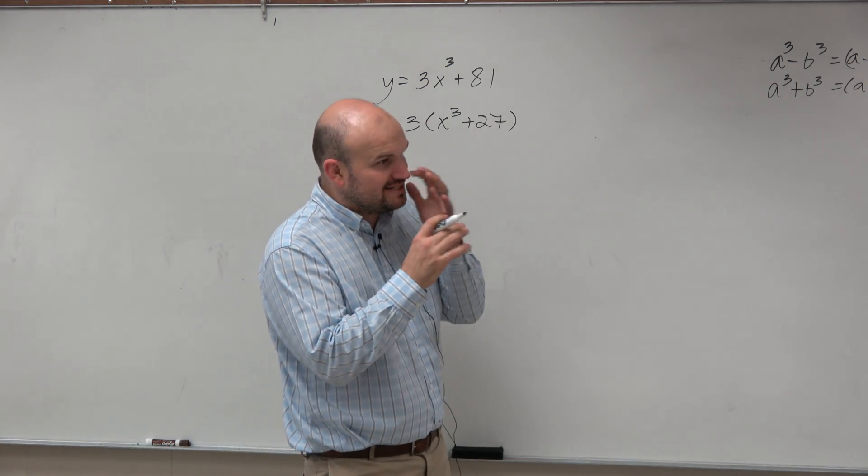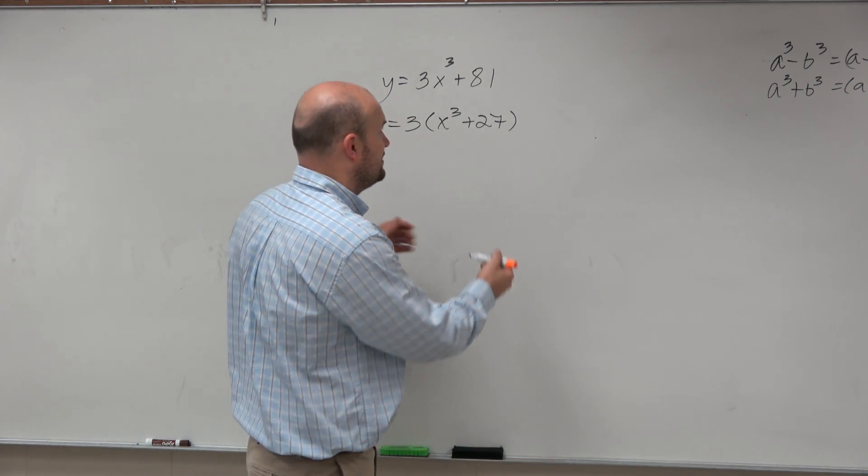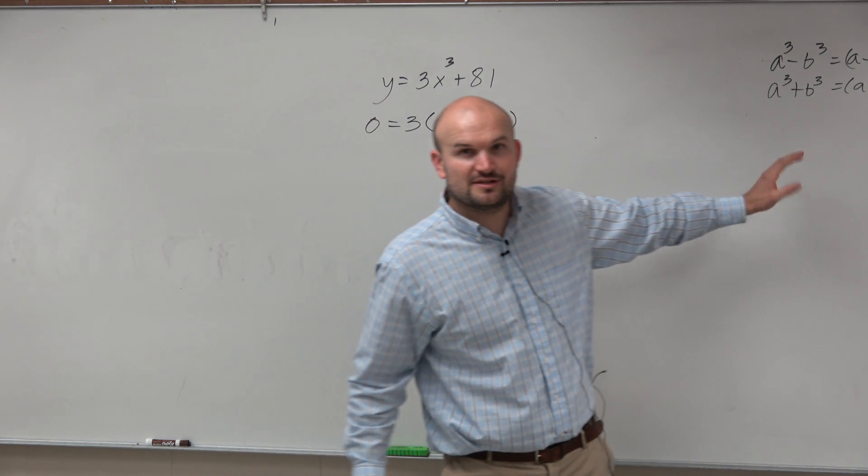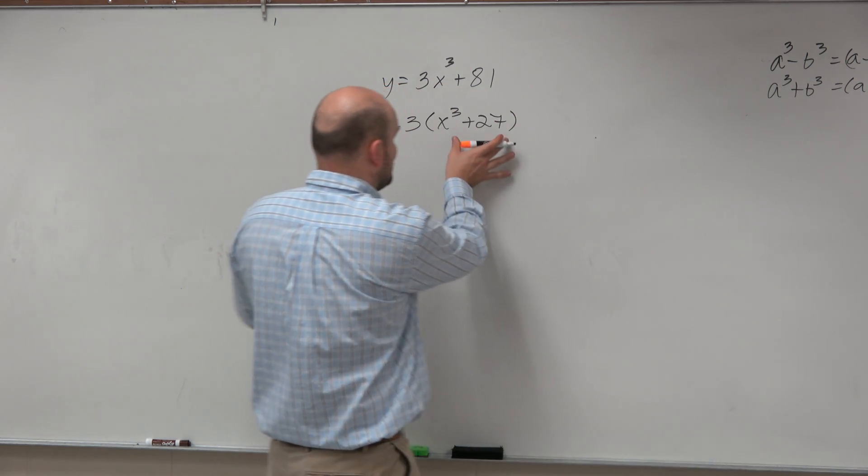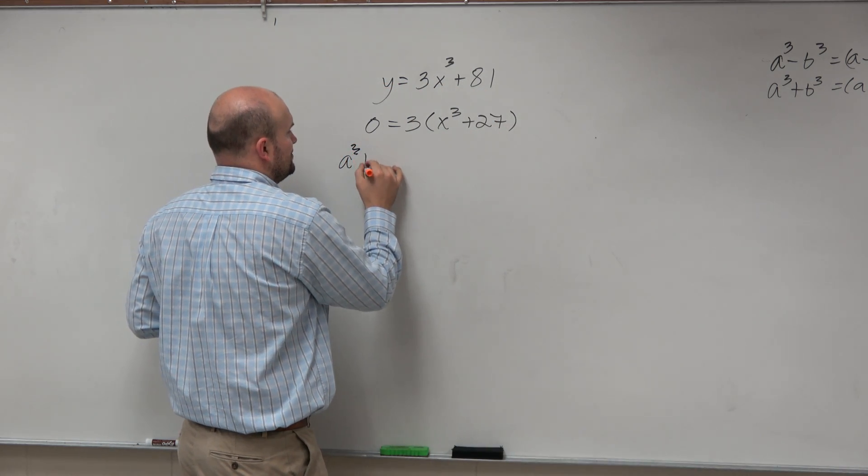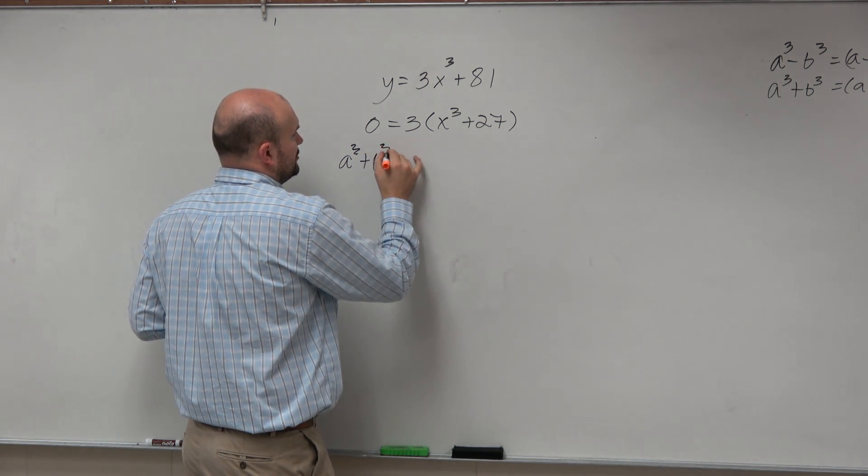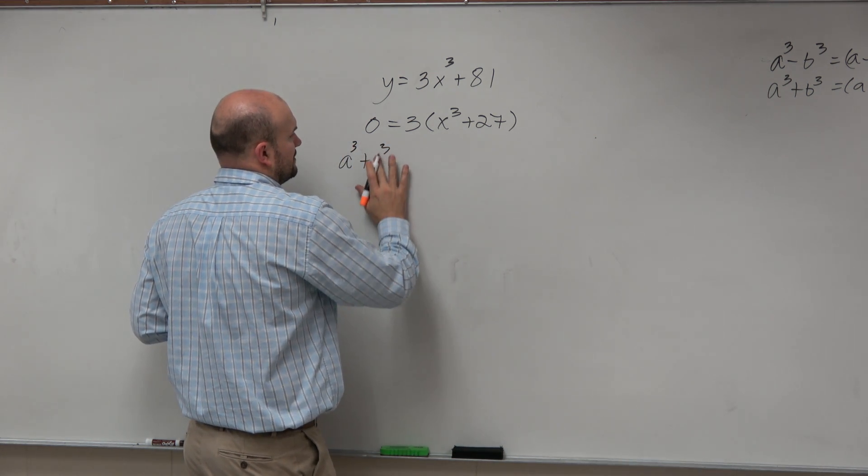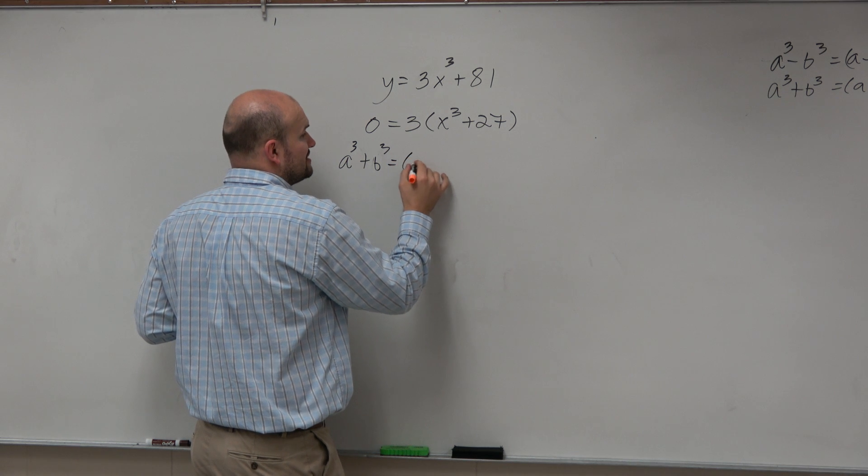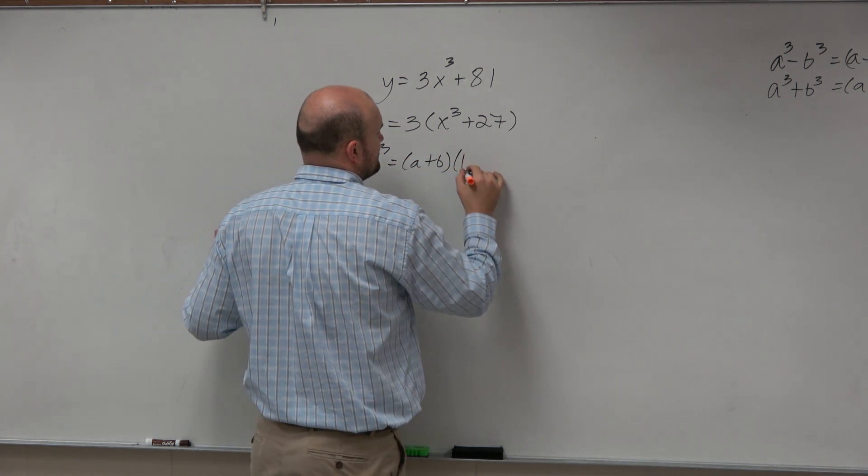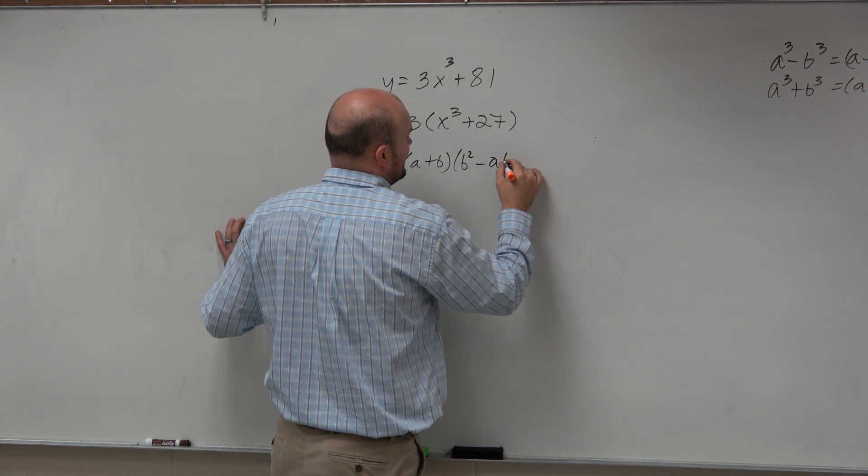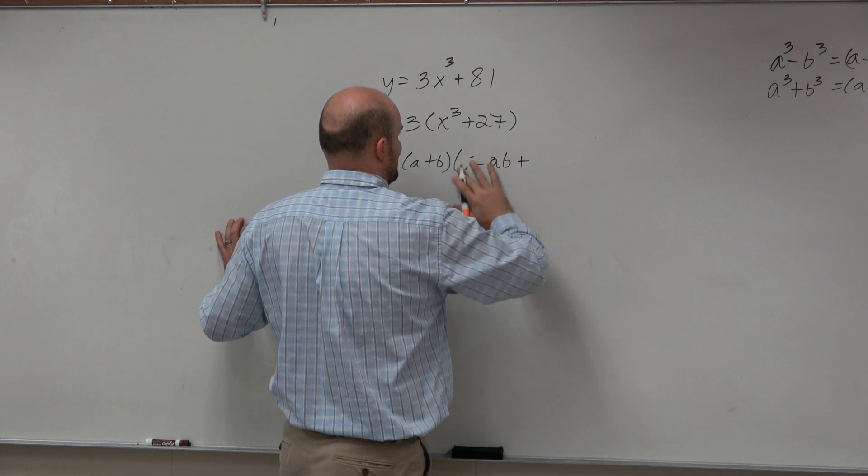So the main important thing is again, by applying the formula. If you guys look at the formulas, right, so we have a sum of two cubes. a cubed plus b cubed equals a plus b times b squared minus ab plus, I'm sorry, a squared.